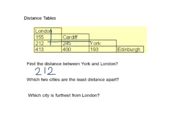The next question asks: which two cities are the least distance apart? I look at the table and find the lowest number, which is 155. I then check which two cities combine to make 155 — reading down it's in the London column, and reading across it's Cardiff. So the two cities are London and Cardiff.